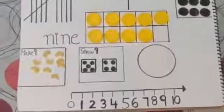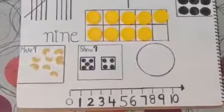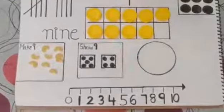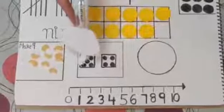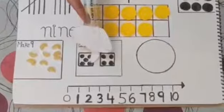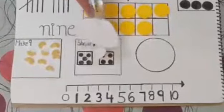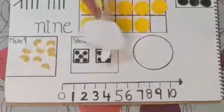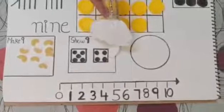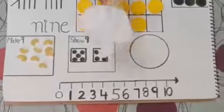Now, let's count nine on the dice. Let's count together. One, two, three, four, five, six, seven, eight, nine. Well done.